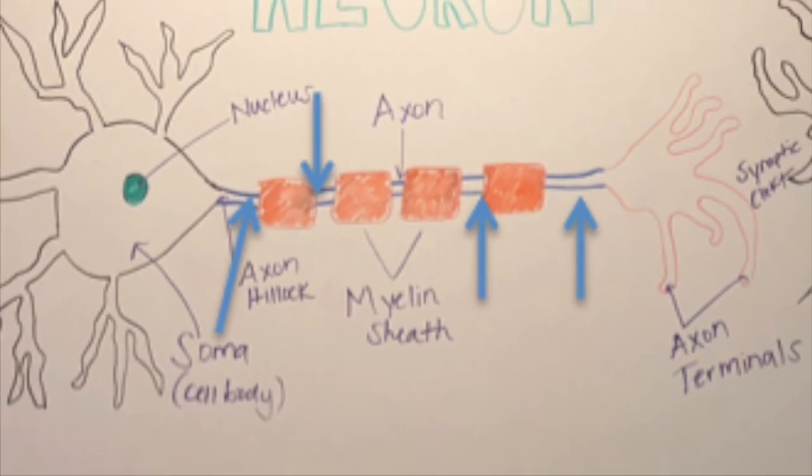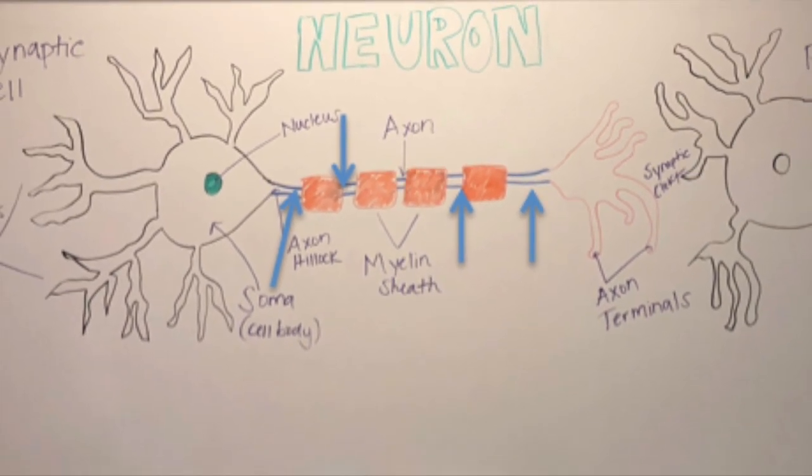The axon is the thread-like structure that generates neural impulses via action potentials.